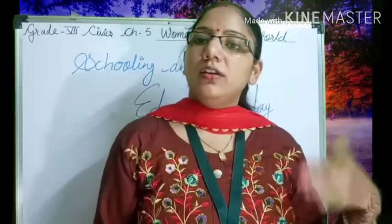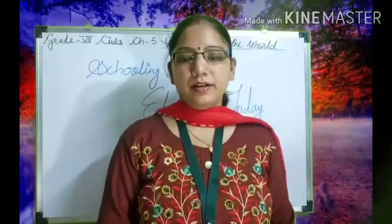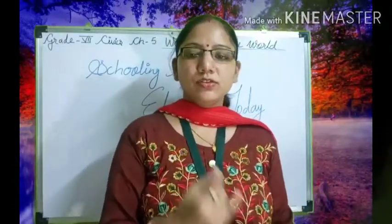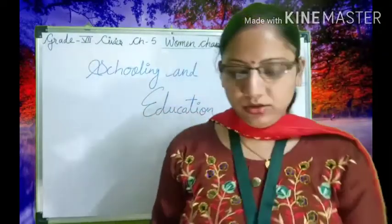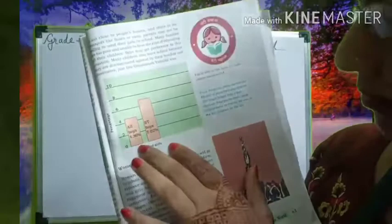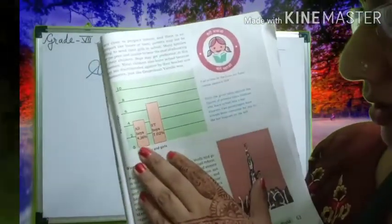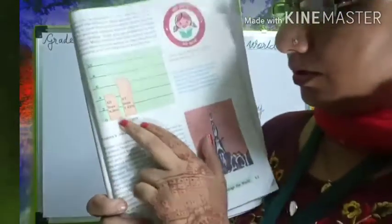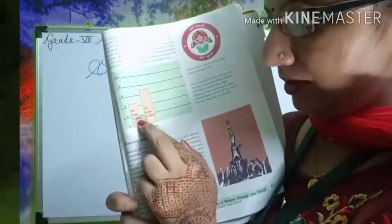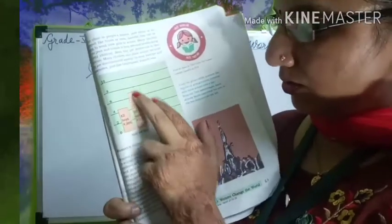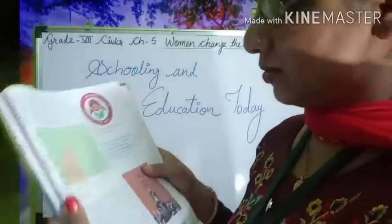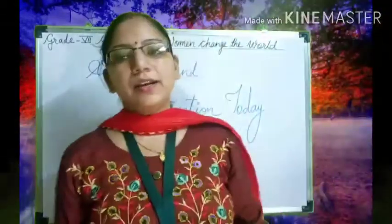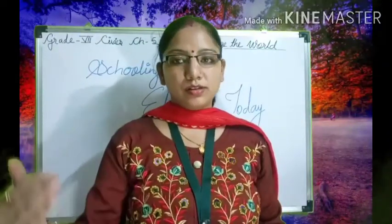Caste-wise discrimination is also shown in your book in the same data. On page number 63, there is a bar diagram showing the percentage of school dropouts. All boys leaving school represent 4.36 percent, but if you compare it caste-wise, the ST boys leaving school are 7.02 percent — out of 10. This shows a kind of discrimination which is set up by our society.